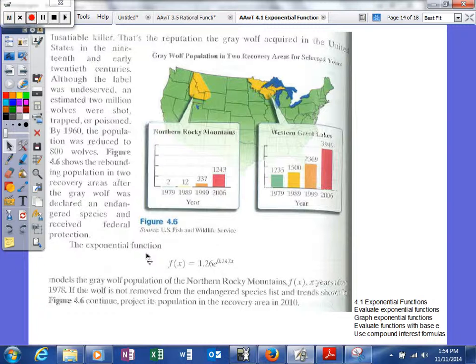What I want to talk about is down here, the exponential function f(x) = 1.26e^(0.247x) that models the gray wolf population in the northern Rocky Mountains. We're talking about this section of our map right here as compared to the western Great Lakes. The function f(x) is the gray wolf population x years after 1978. If the wolf population is not removed from the endangered species list and trends shown in the figure continue, project the population in the recovery area in 2010. So we'll basically use our formula.